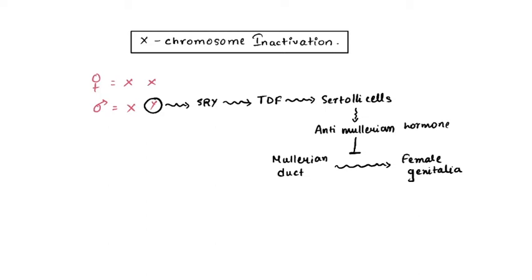So this is how the Y gene helps in the development of the male characters. Now since the female has got two X chromosomes and the male has got one X chromosome, one of the X chromosomes needs to be compensated because if both the X chromosomes are expressed then this condition leads to something called a super female and this is not the condition for a normal female. That is why one of the X chromosomes needs to be suppressed or needs to be compensated for.